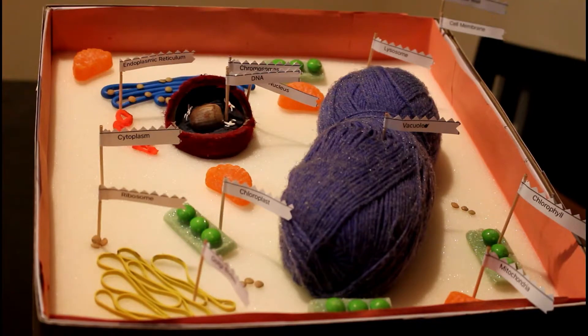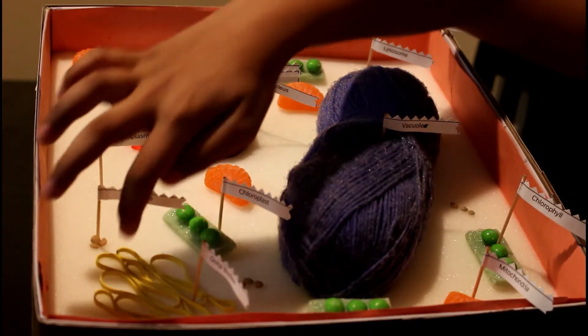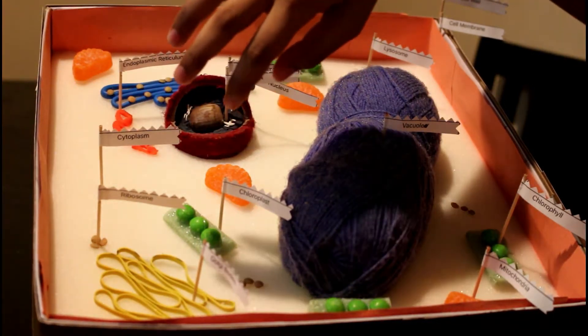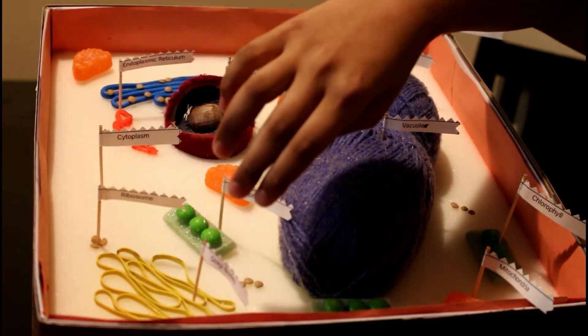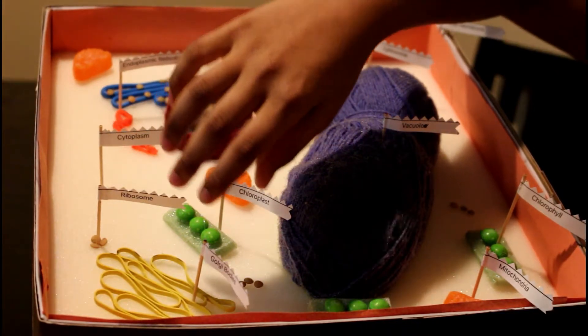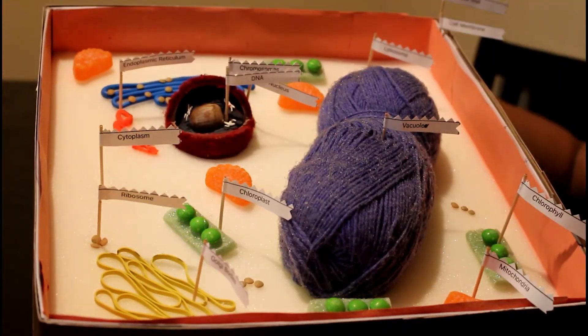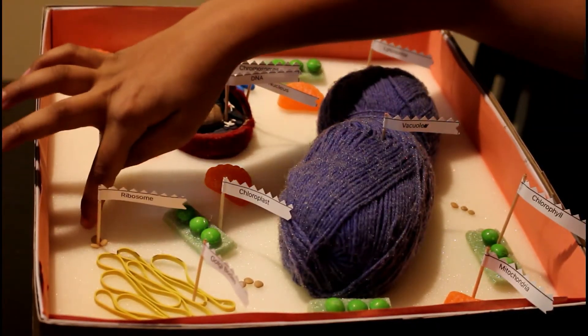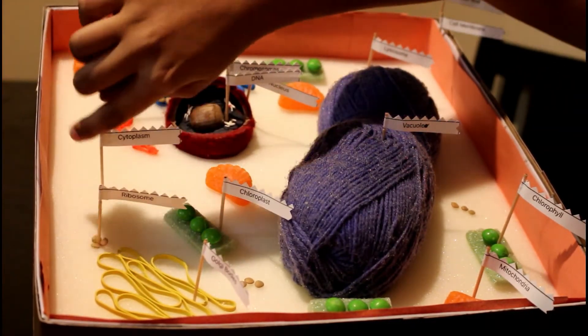These rubber bands I use are the Golgi bodies. They're flattened sacs or tubes and they receive proteins and minerals, repackage them, and redistribute them. These lentils I use are ribosomes.